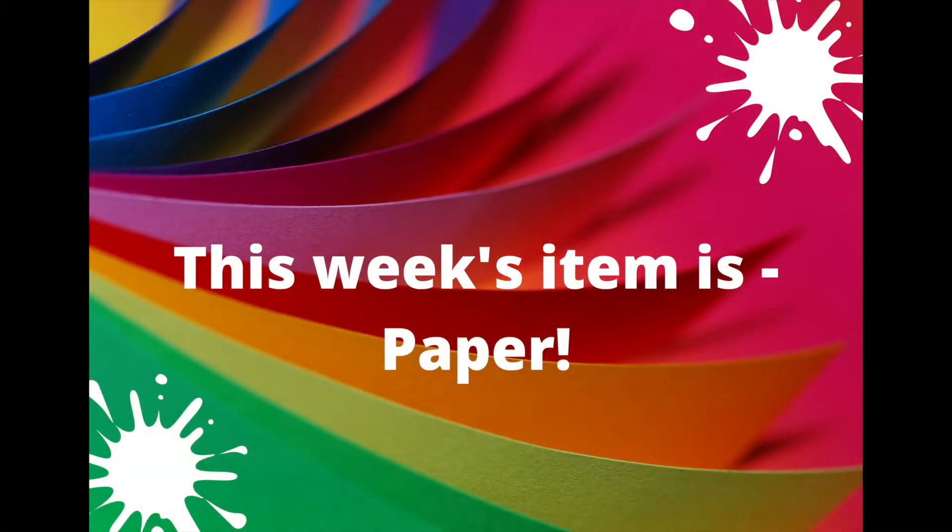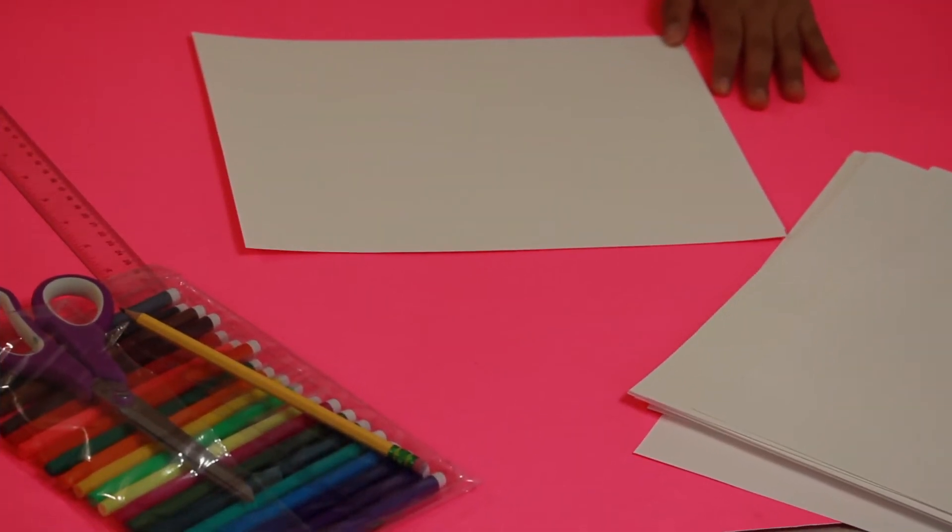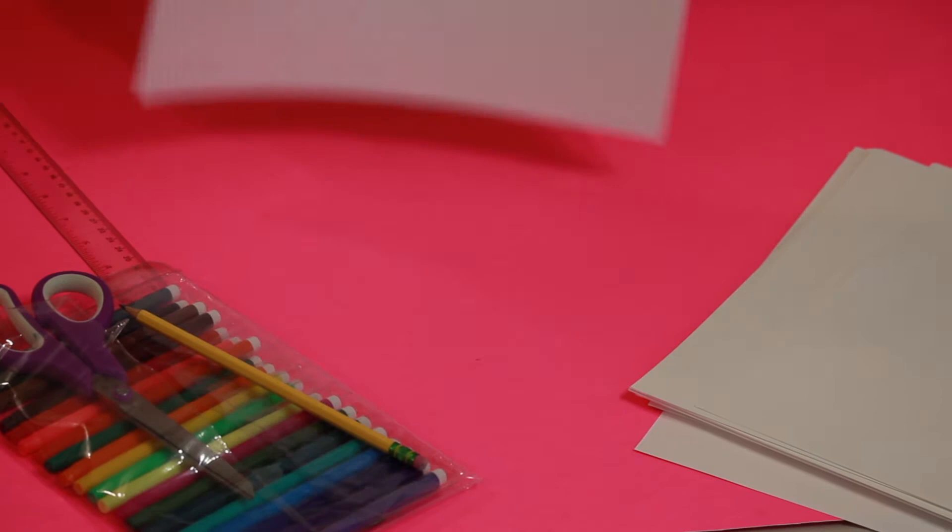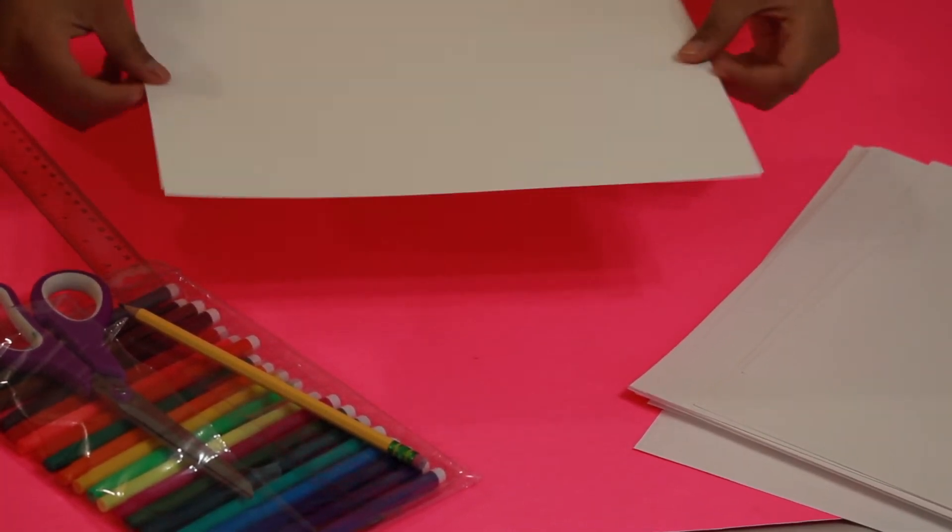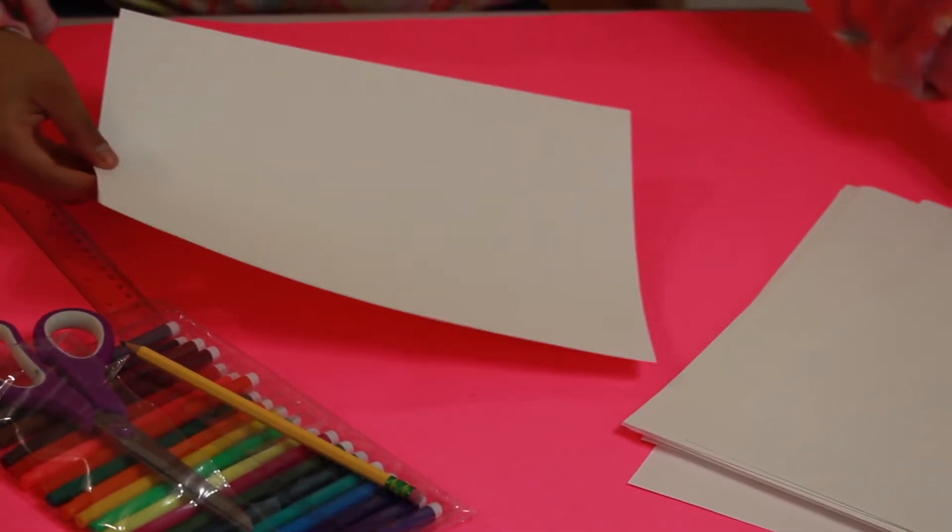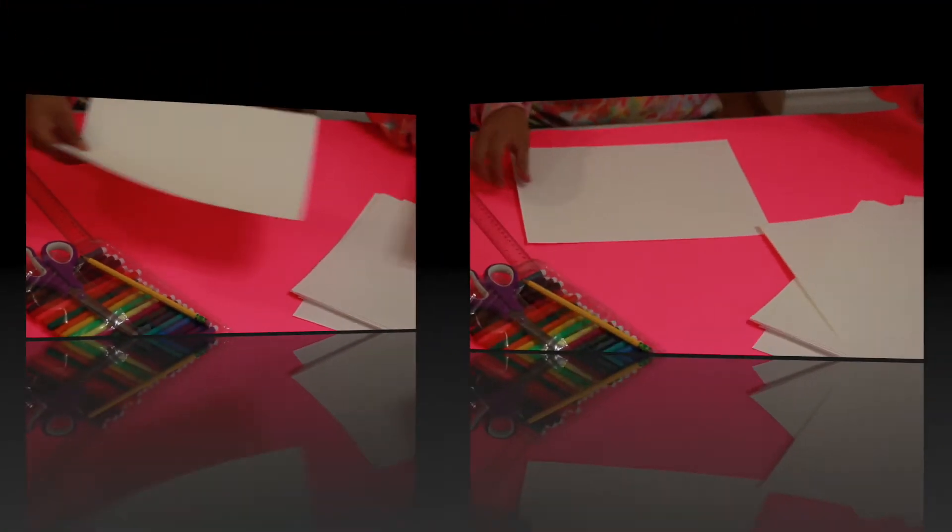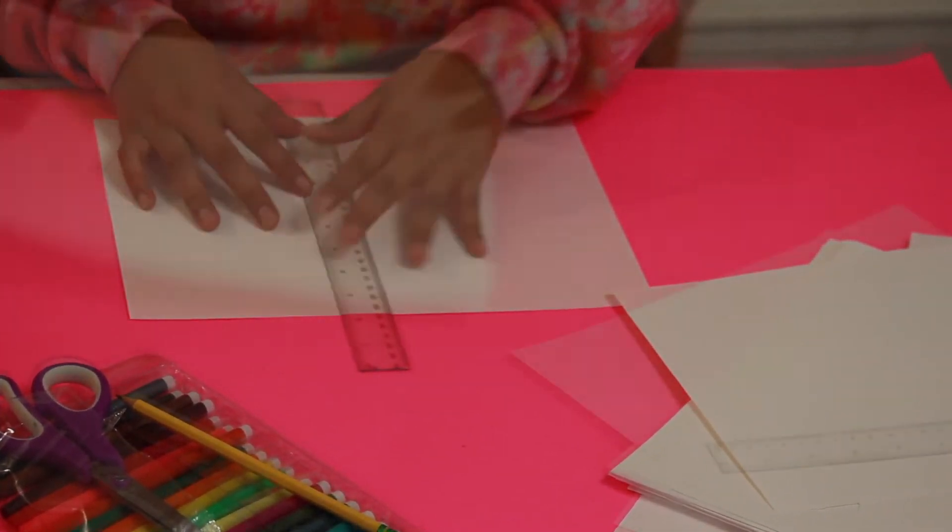So for our first project we are going to do a paper bookmark. Alright, so the piece of paper I'm going to be using is a simple white sheet. Your paper needs to be 15 centimeters long and wide so I'm going to be cutting mine.